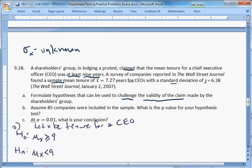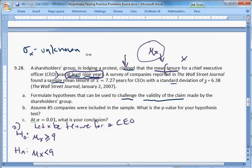How do we know this? Well, we know because claimed right here says they have a claim. It says at least nine years right here. They're talking about the mean tenure for a chief executive. So the tenure for a chief executive is what we're going to make X. And so they're talking about mu X. And that's what our hypothesis has to be about. The claim they're making is that it's at least nine years, and that's how we get this. How do we know where to put it? Well, because we're challenging the validity of their claim. We have to give them the benefit of the doubt. And so their claim goes into the null.